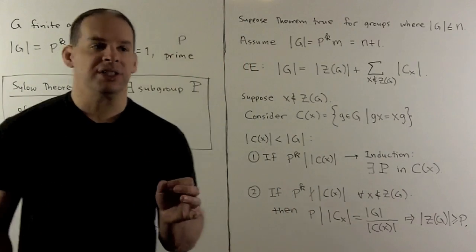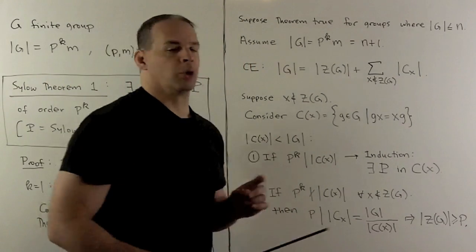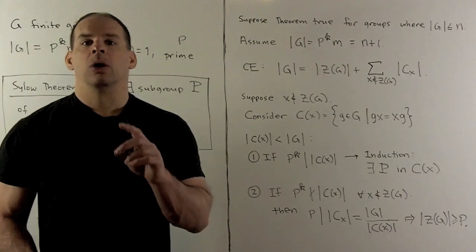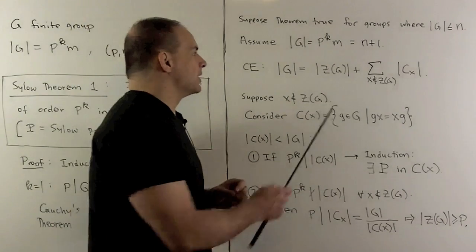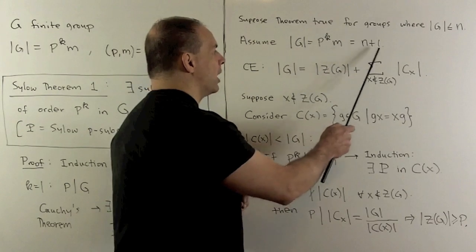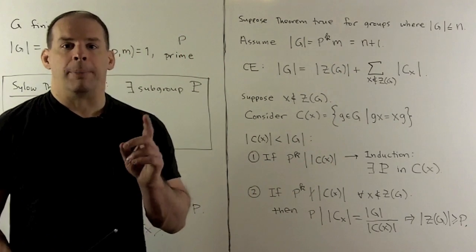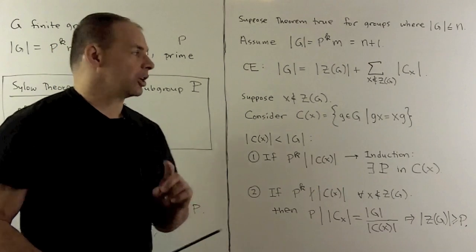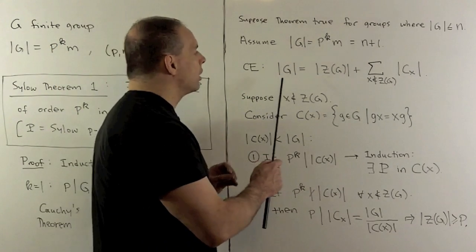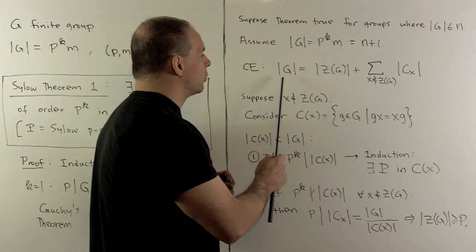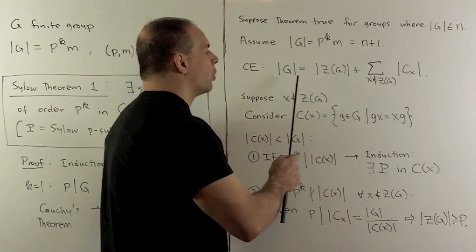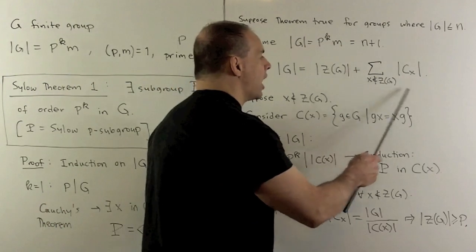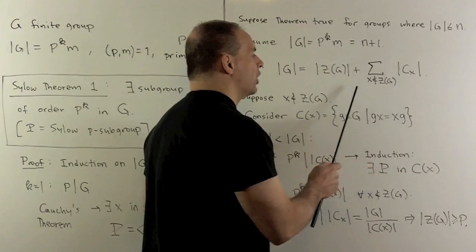For the induction step, we'll just assume the theorem is true for groups where the order of the group is less than or equal to n. We'll assume that our group has order p^k times m equal to n plus 1. First, we run things through the class equation. So let's recall: the class equation says we have a finite group G, the order of the group equals the order of the center of the group plus the sum of the orders of conjugacy classes for elements that are not in the center.